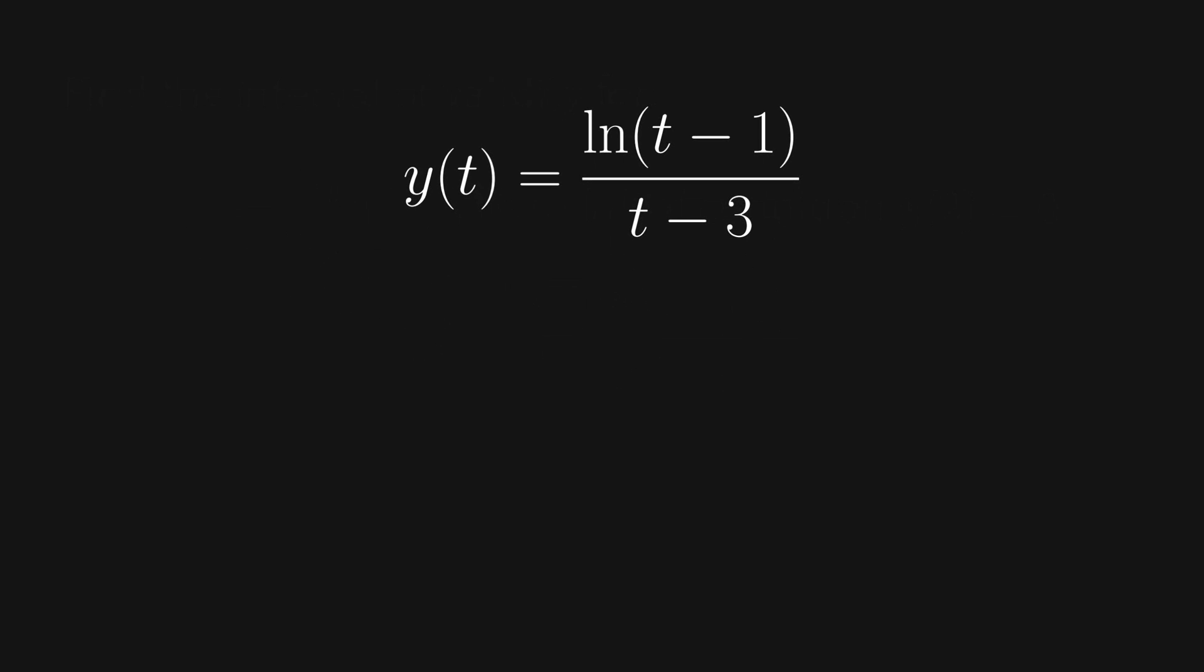Notice that with natural log of t minus 1, whatever is inside the log always needs to be positive. So we have the general restriction that t minus 1 is greater than 0, which means t is greater than 1.